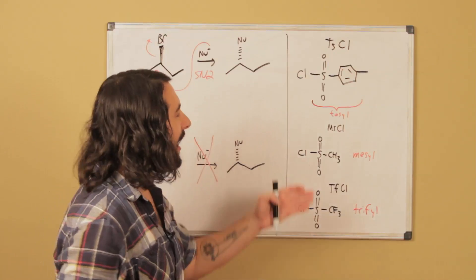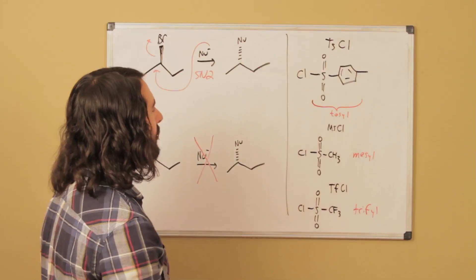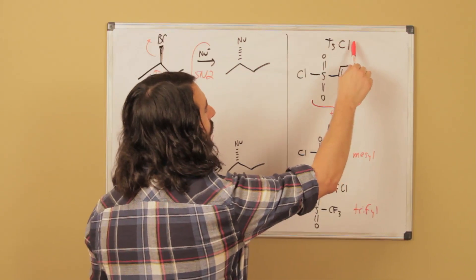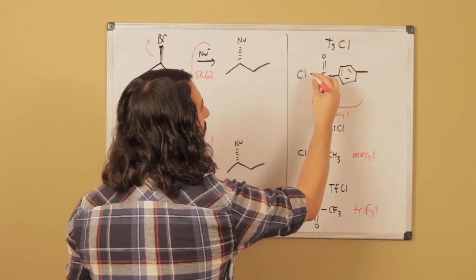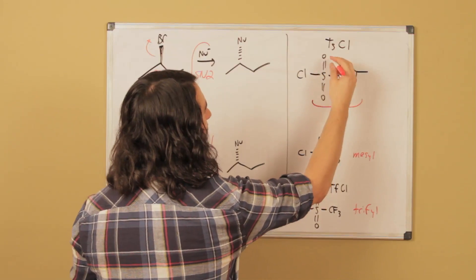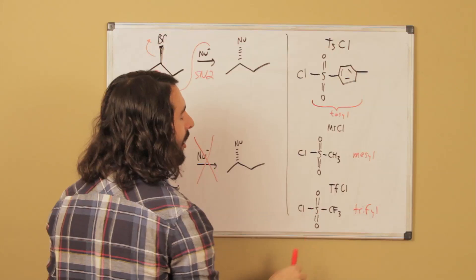So let's say we react with tosyl chloride. This is called tosyl chloride and this right here is the tosyl group. So this is tosyl and then chloride.